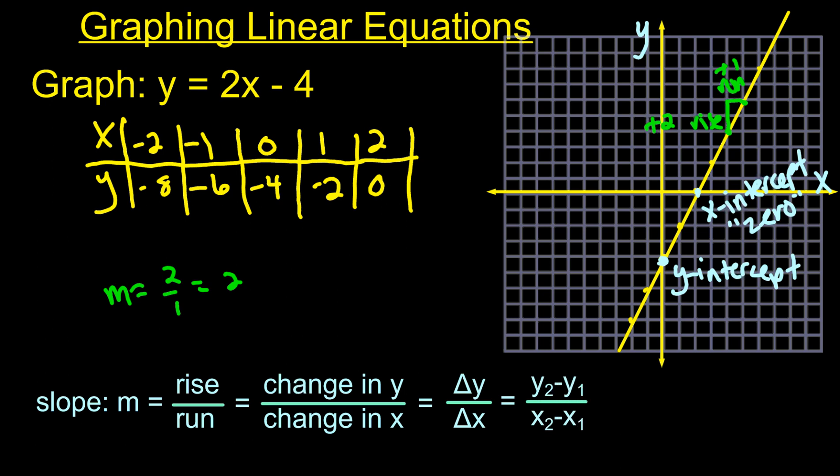Another way, like a way to calculate it if you want a formula, is Y2 minus Y1 over X2 minus X1. And what that means is if you have two points on this graph, so this point here would be over 4 up 4. And the next point would be over 5 up 6. And so what you would do is one of these would be X1, Y1, and one would be X2, Y2. Then you just plug those in the formula.